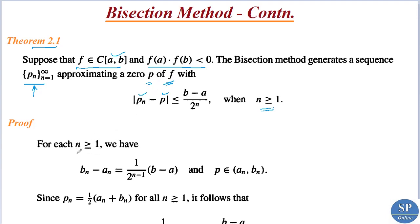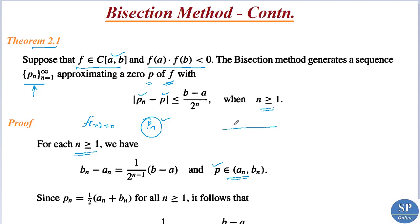To prove this, for each n ≥ 1, bn - an = (1/2^(n-1))·(b - a), and p belongs to [an, bn]. Here p is the actual root of f(x) = 0 and pn is the approximate root in the nth iteration. For any n ≥ 1, bn - an equals this quantity because if we let the initial interval be [a, b]...